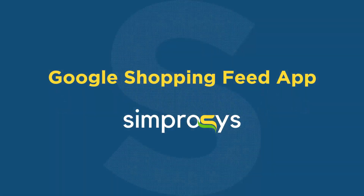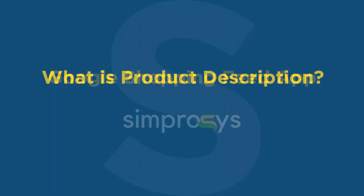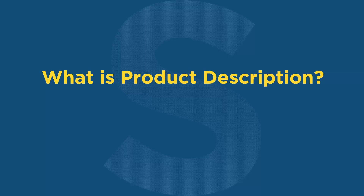Hello friends, welcome to the help videos of Google Shopping Feed app by Symprosis. In this video we are going to see what are the product description options and how this app can help you optimize the description for better performance of shopping campaigns. Description is one of the most important factors that can affect the performance of your shopping campaigns.